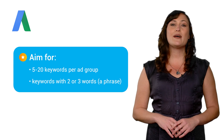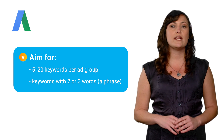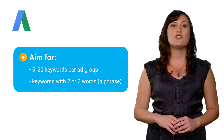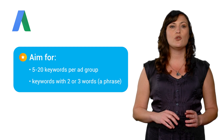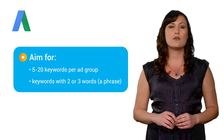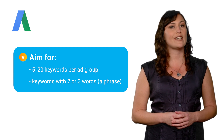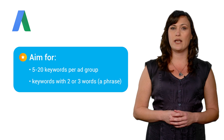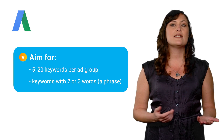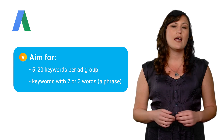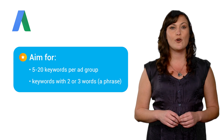For best results, we recommend picking between 5 and 20 keywords for each ad group. Keywords of 2 or 3 words, or a phrase, tend to work most effectively. Once your ads start running, you can evaluate how your ads and keywords are doing and make any adjustments to improve performance.